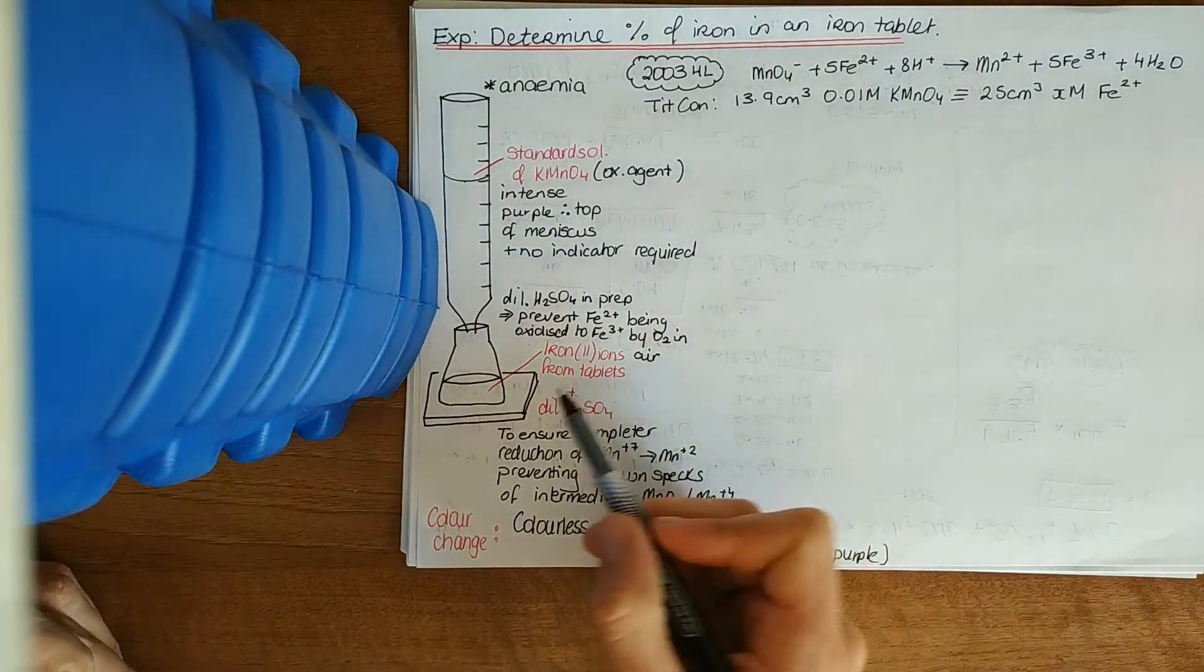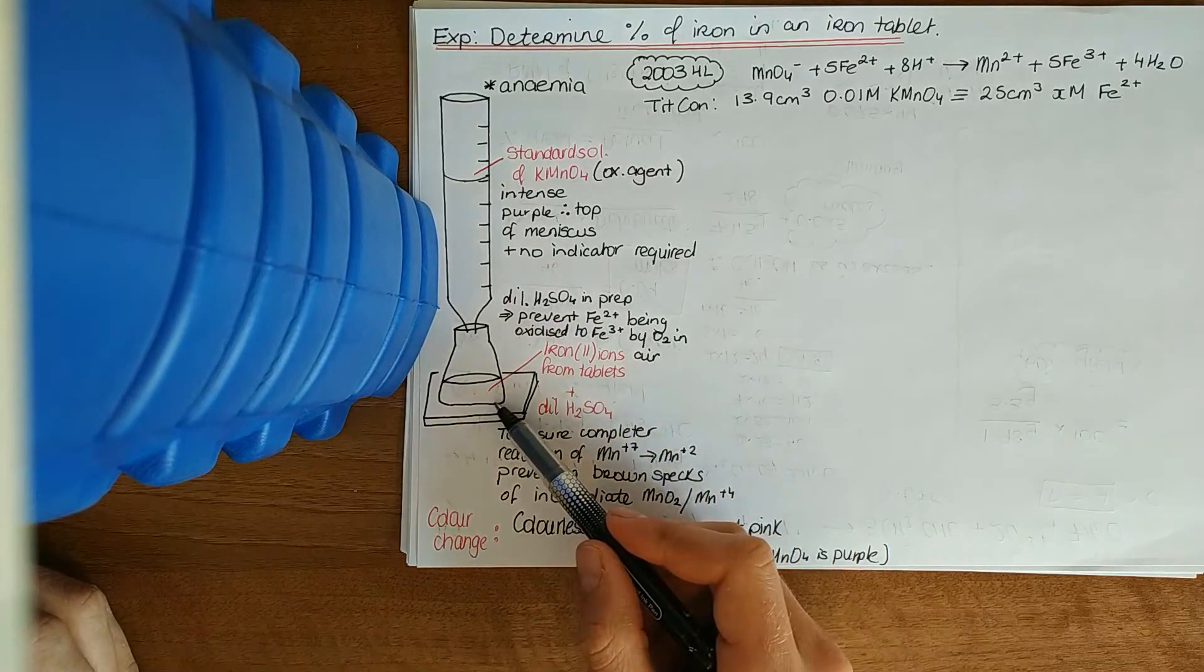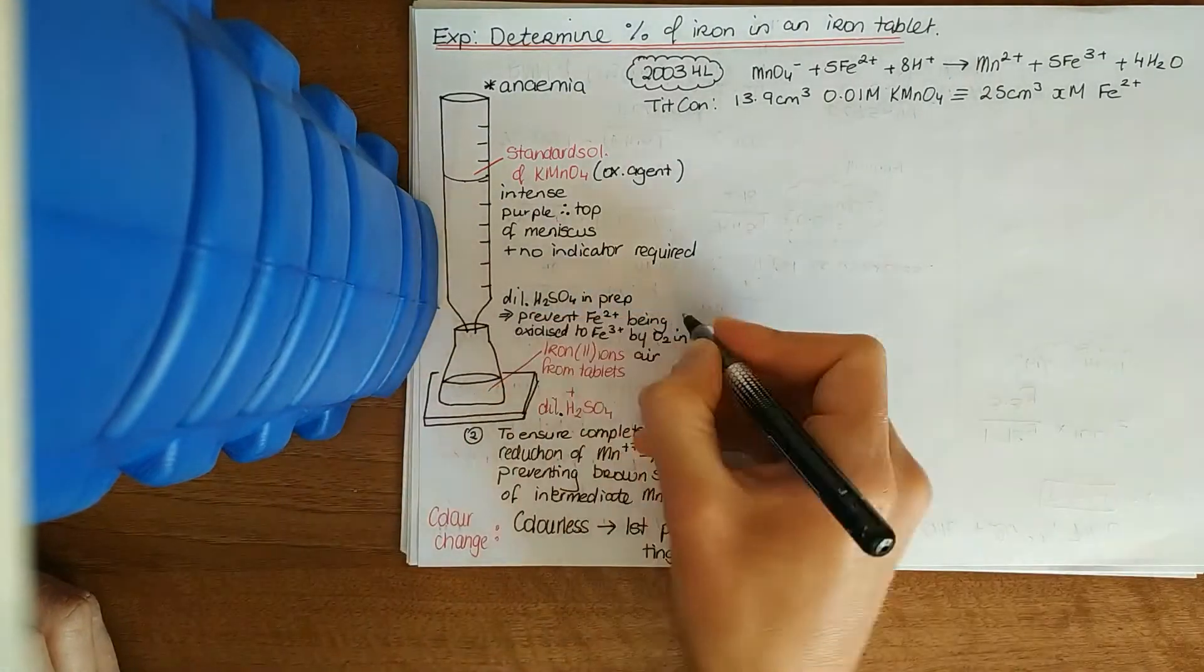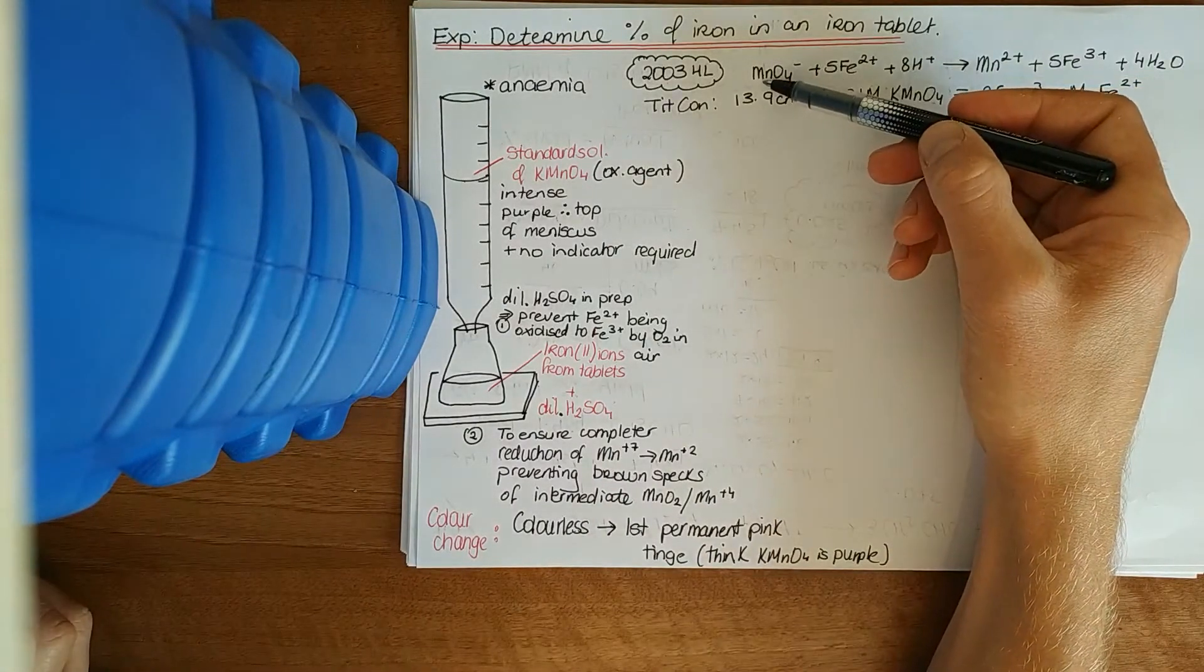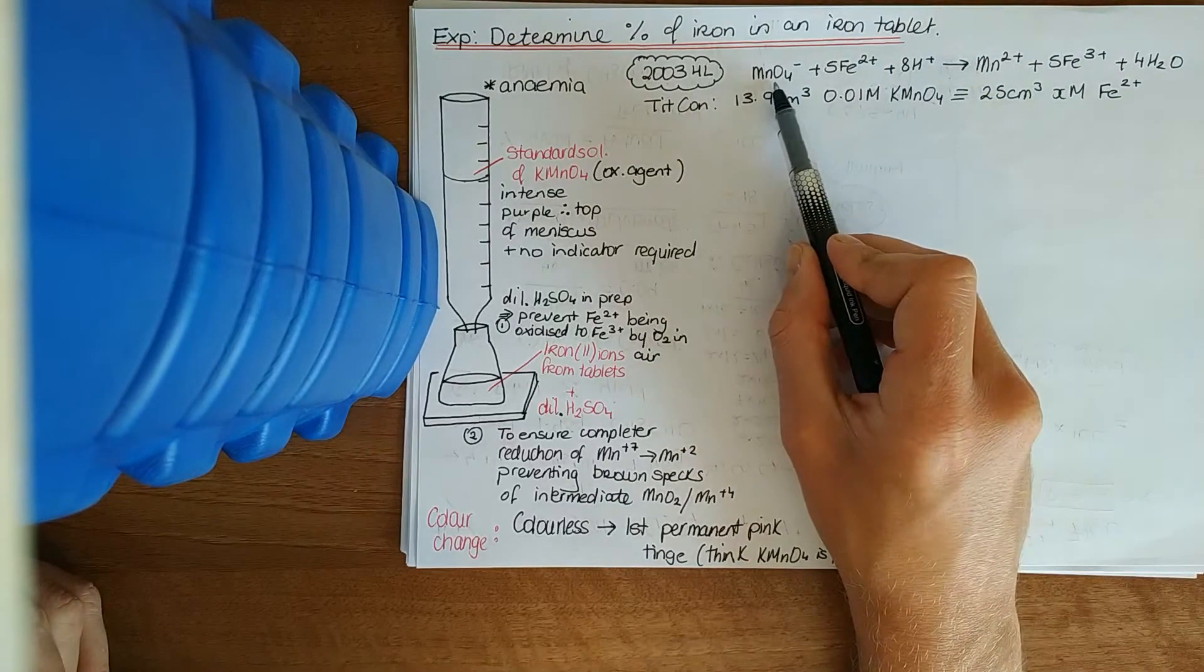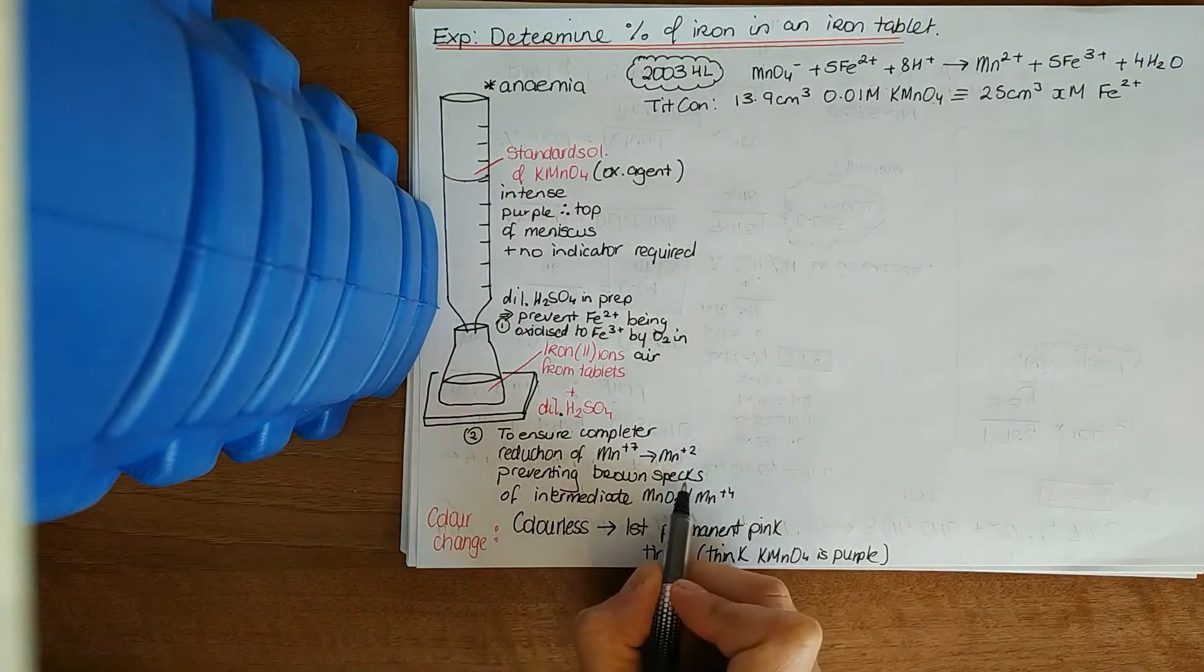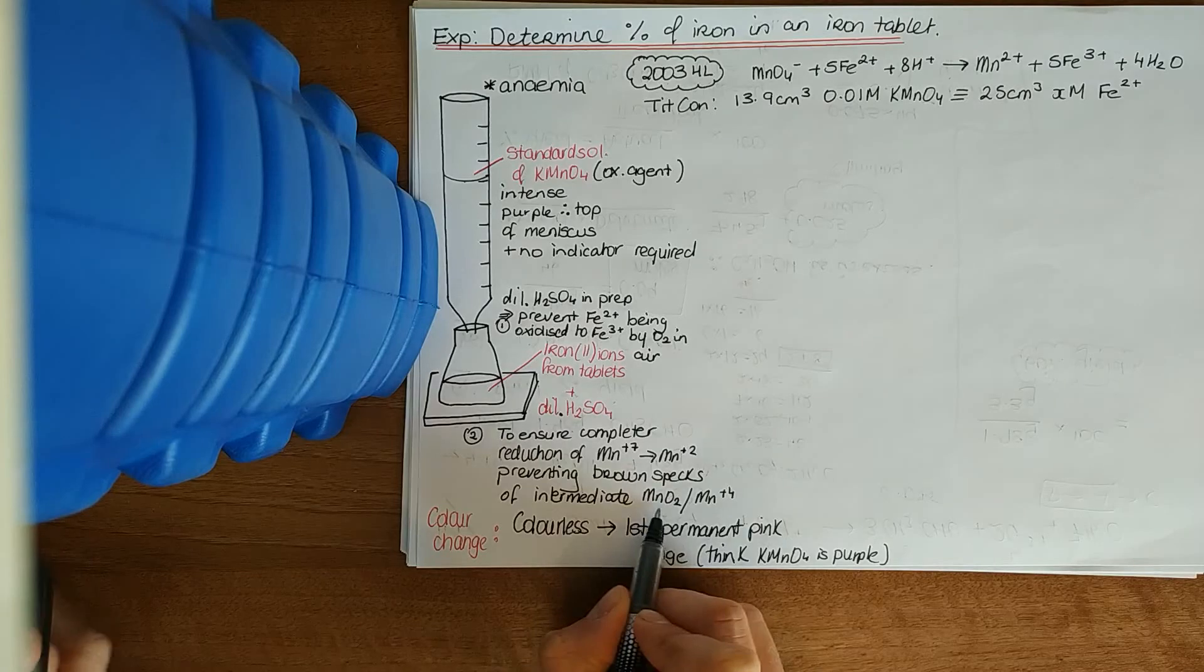Once that solution has been produced into a volumetric flask, poured into a beaker, and transferred into the conical flask using a pipette, we add additional dilute sulfuric acid. The second reason for this is to ensure complete reduction of Mn+7 to Mn2+. We know if we haven't got complete reduction, if we forgot to add in enough dilute sulfuric acid, because you'll get brown specks, and these brown specks are an intermediate state of Mn4+, which is manganese dioxide MnO2.